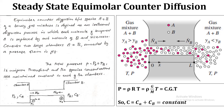Let's start with steady state equimolar counter diffusion, which is a special case of diffusion mass transfer. In this case the mixture is at constant pressure and temperature throughout. The equimolar counter diffusion between species A and B of a binary gas mixture is defined as an isothermal diffusion process in which each molecule of component A is replaced by each molecule of component B and vice versa. Consider two large chambers A and B connected by a passage of length L, containing a binary mixture of gases A and B at uniform temperature and pressure throughout.